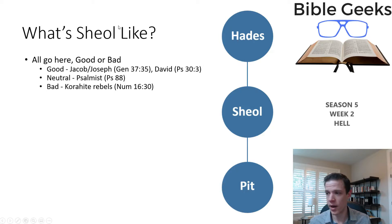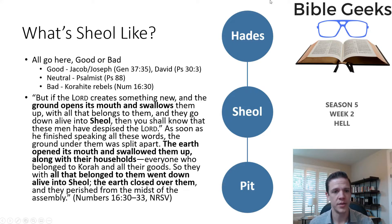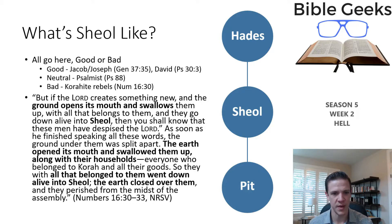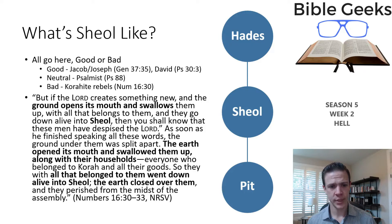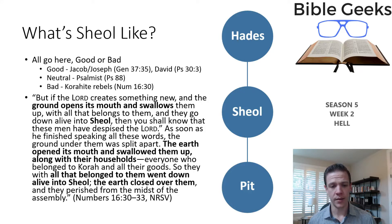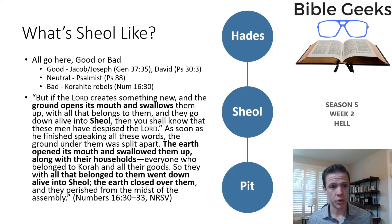And then there's the bad — the Korahite rebels. This is Moses, when people are coming up against him in the desert: 'If Yahweh decrees something new, and the ground opens up its mouth and swallows them up with all that belongs to them, and they go down alive into Sheol, then you shall know that these men have despised Yahweh.' And as soon as he finished speaking, the ground split apart. The earth opened its mouth and swallowed them up, along with their households, everyone who belonged to Korah and all their goods, and they went down alive into Sheol, and the earth closed over them. So the Korahite rebels were bad and were swallowed up — possibly an earthquake — but what we get is not a description of geology, but rather that people considered enemies of God were drawn down into Sheol. So good, bad, or otherwise, you're going to Sheol.